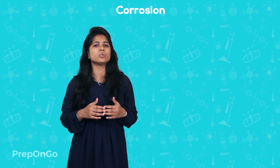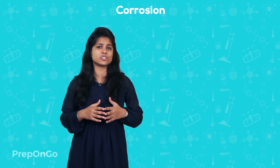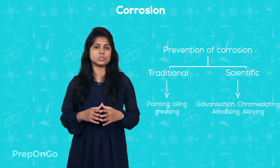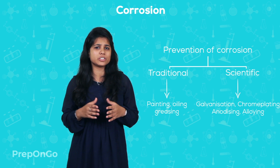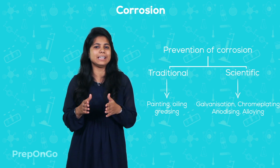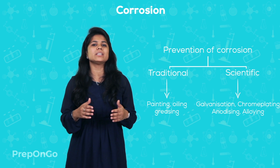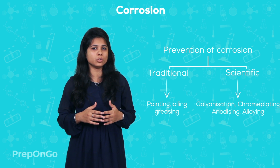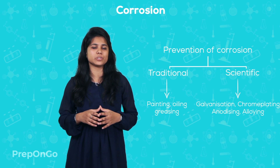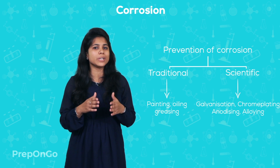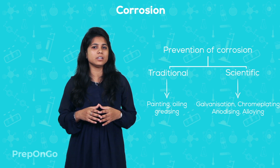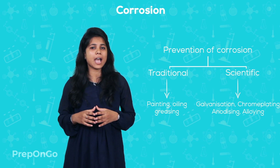Since corrosion causes wastage of metal, we have some preventive measures. The basic and traditional ways for preventing corrosion are oiling, greasing, and painting. But there are many scientific ways also to prevent metal from corrosion. The techniques we are going to see are galvanization, chrome plating, anodizing, and alloying.